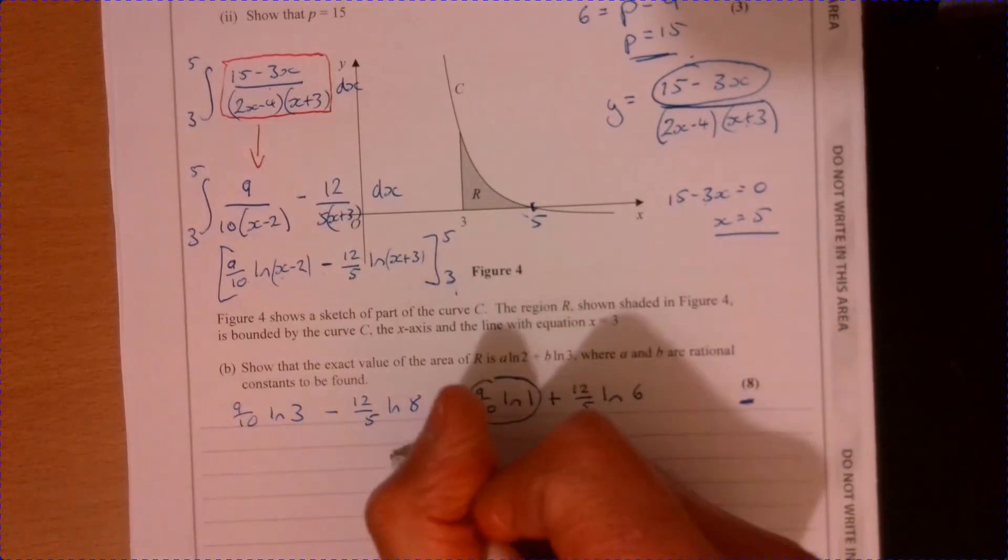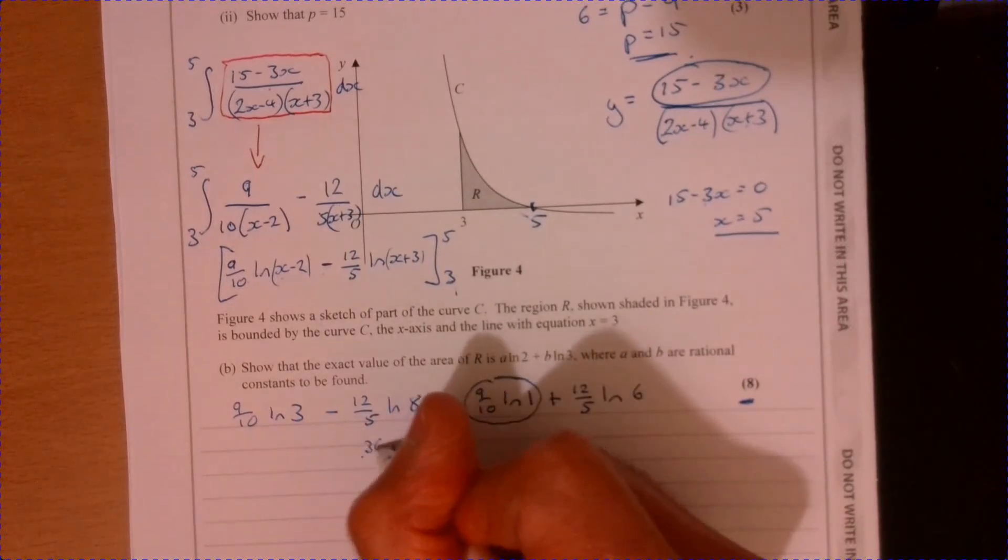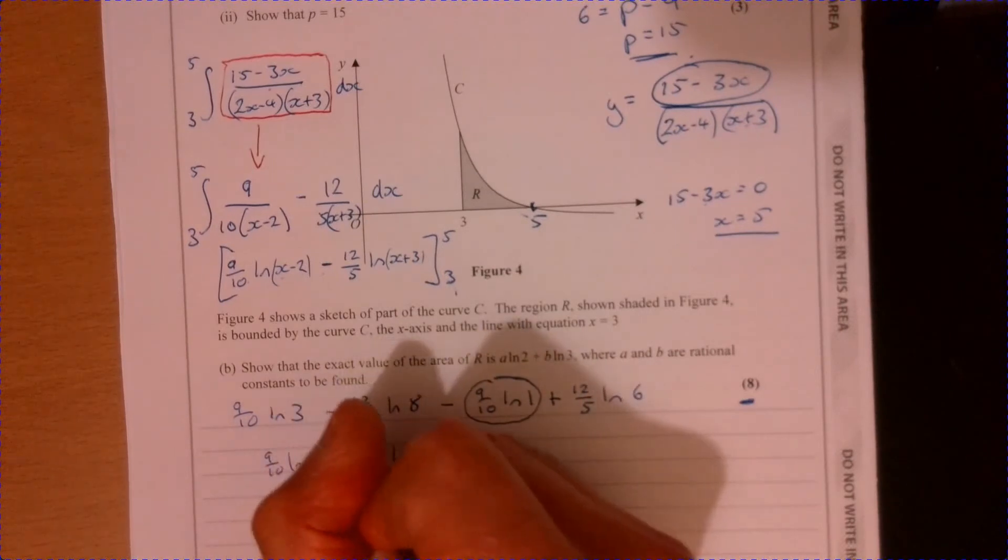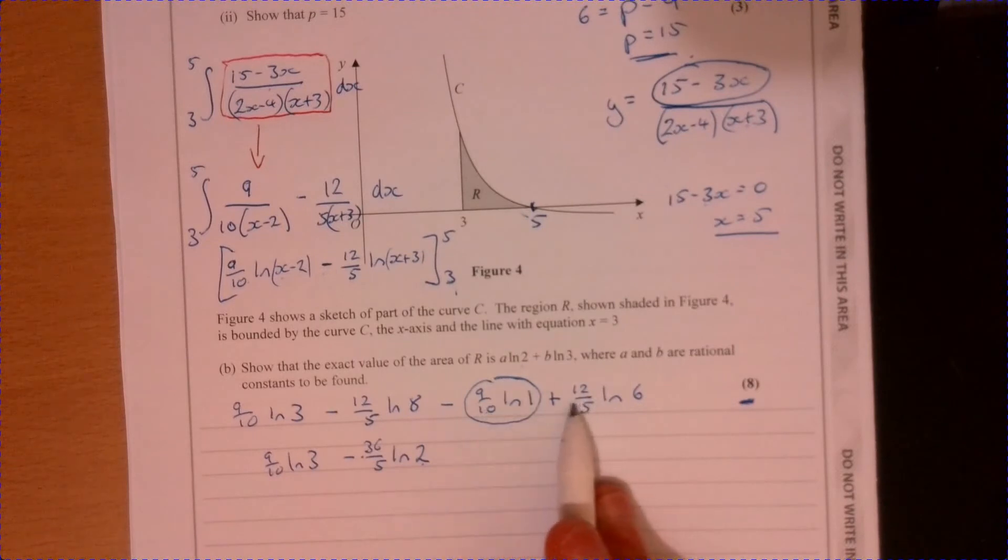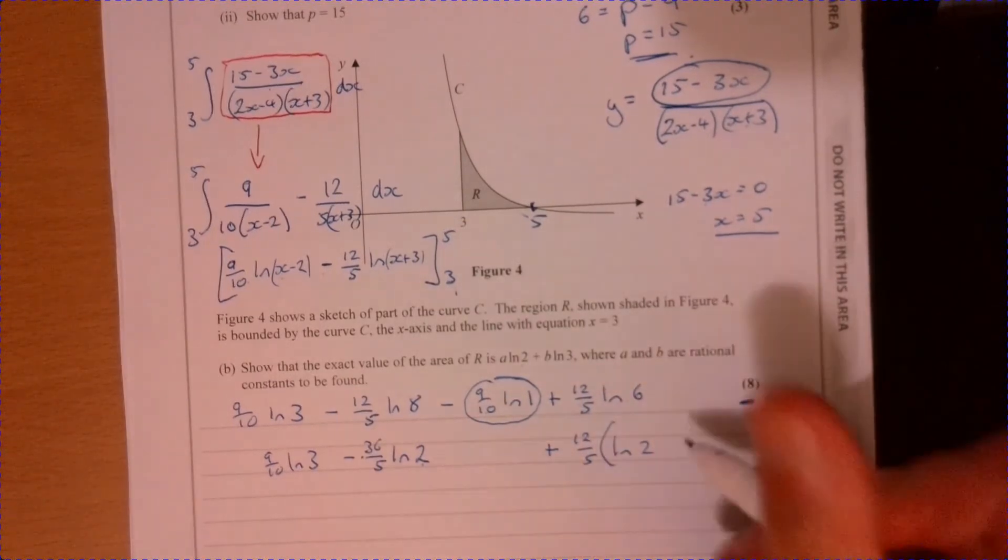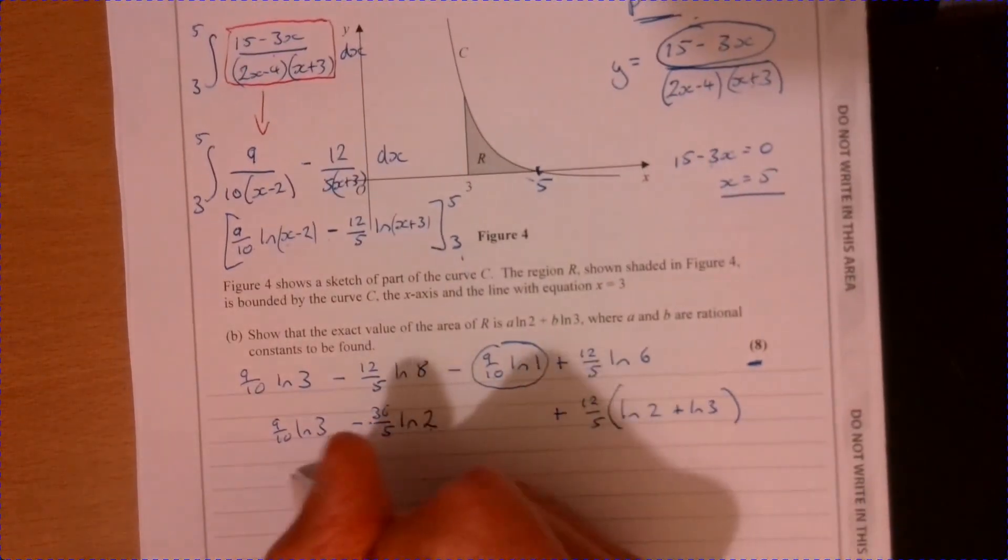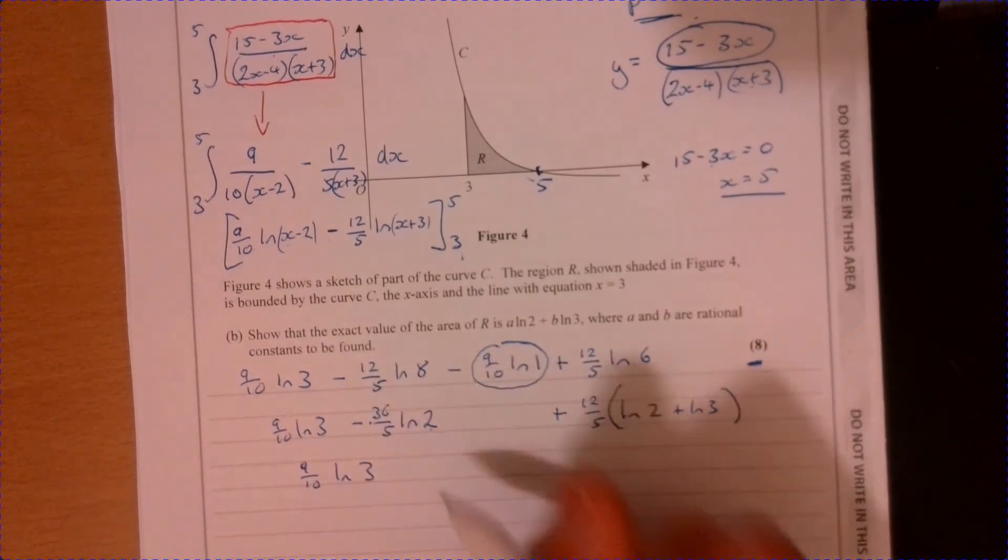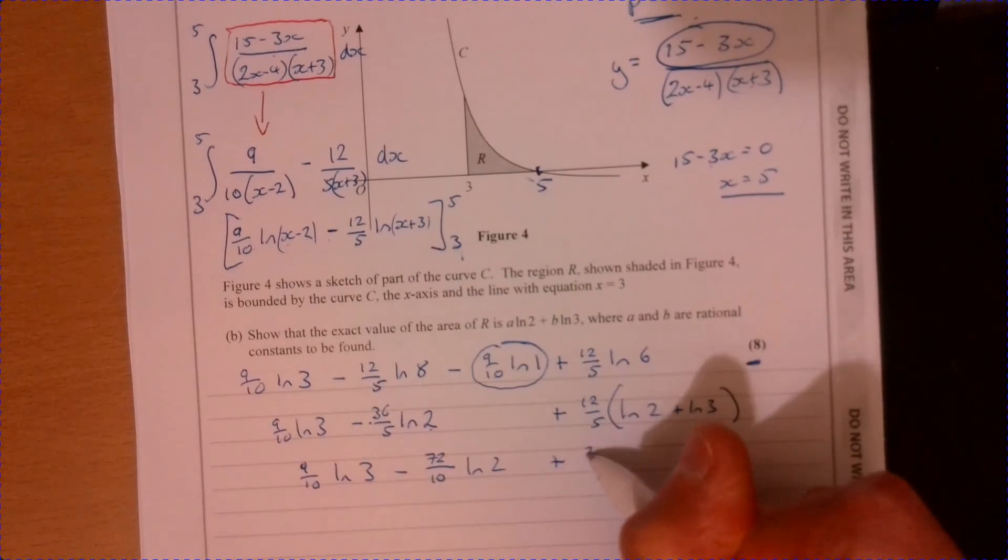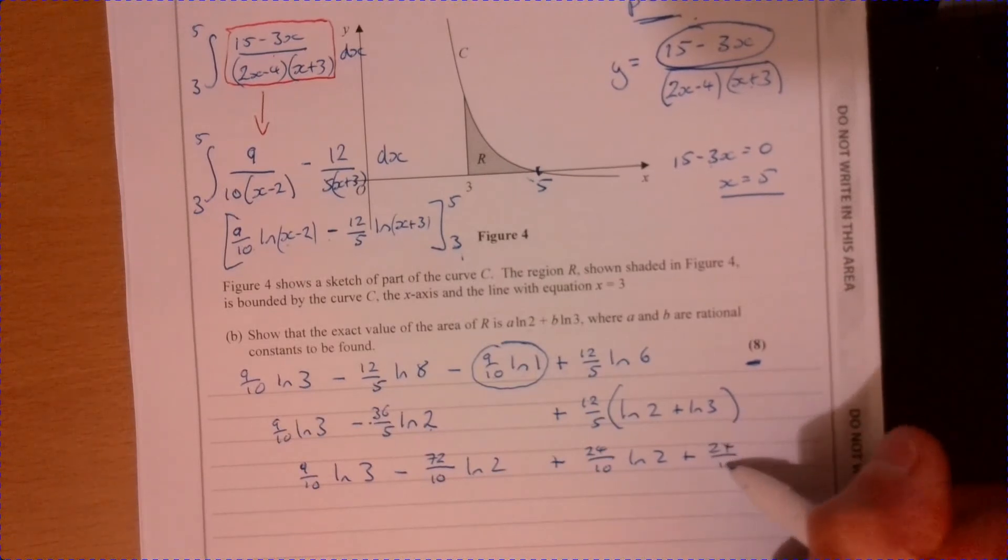ln 8 is ln 2 multiplied by 3. So it's going to be 36 over 5, 9 tenths ln 3. So we're not going to worry about this bit. Now I need to try and think about how to write ln 6. Well, ln 6 is ln 2 plus ln 3. I'm just using my log laws. Now let's write the whole thing out. I'm going to write everything out over 10 because we've got some fractions there, and it's just going to make life a little bit easier for us. So 9 tenths ln 3 take away 72 tenths ln 2, ln 2 plus 24 over 10 ln 2, plus that's going to be 24 tenths ln 3.